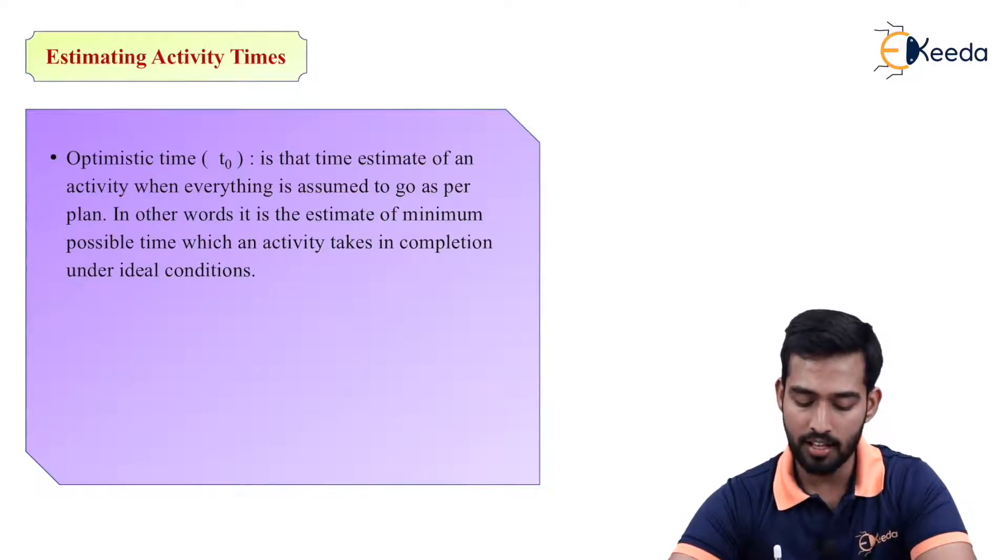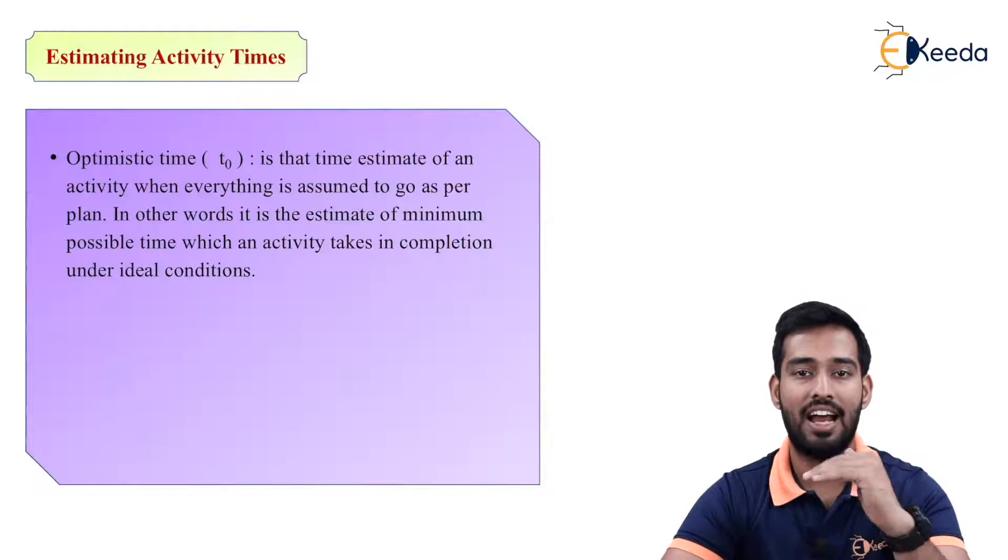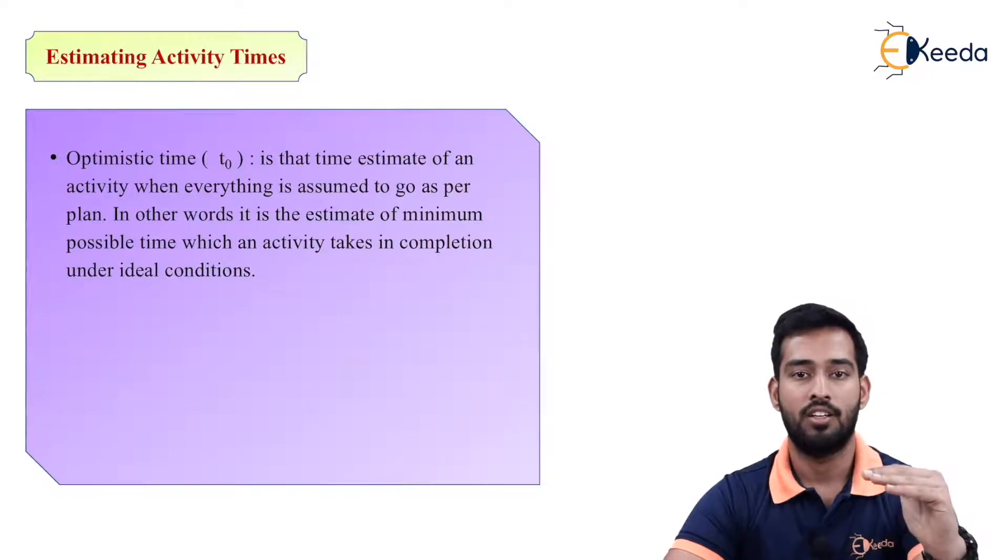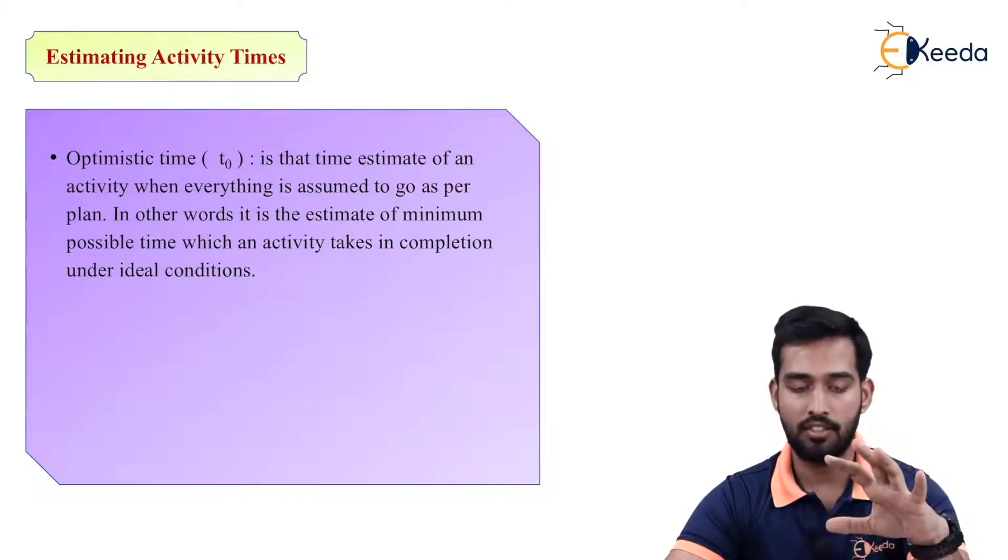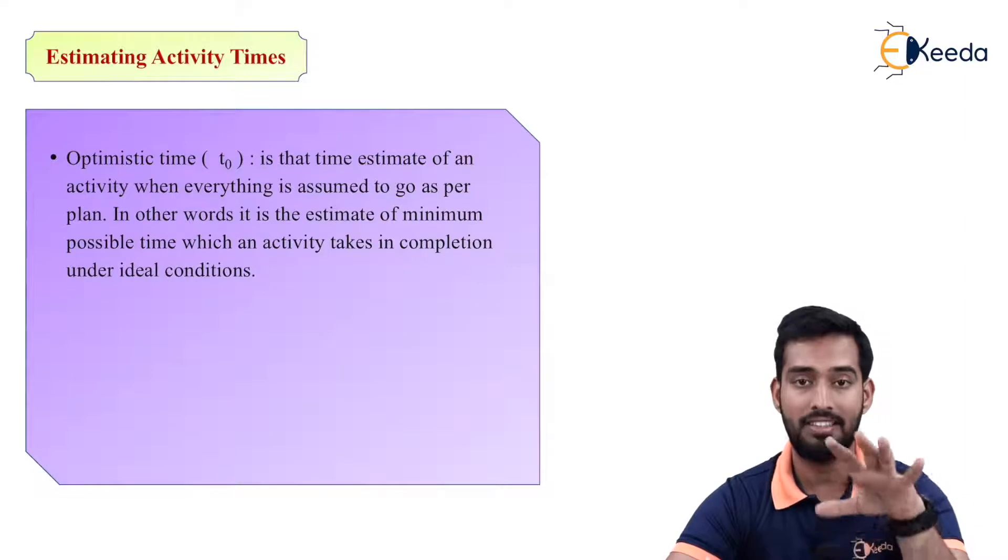In other words, it is the estimate of minimum possible time which an activity takes in completion under ideal conditions. As we have seen, all the conditions are ideal for your project. So whatever you require, no other events are hampering your project. So in such type, it is known as optimistic time.